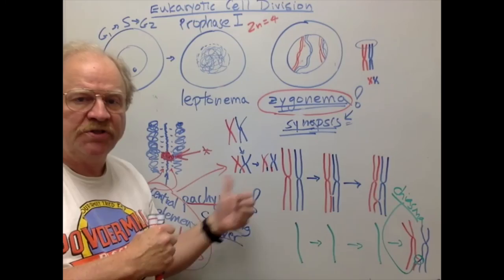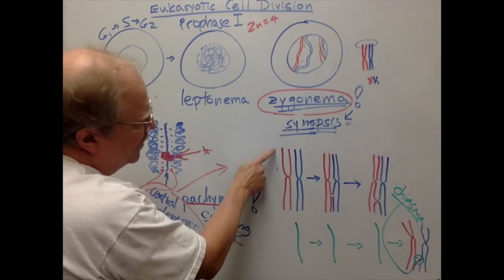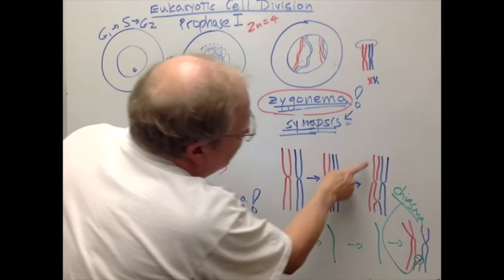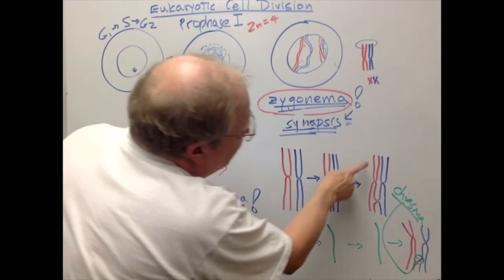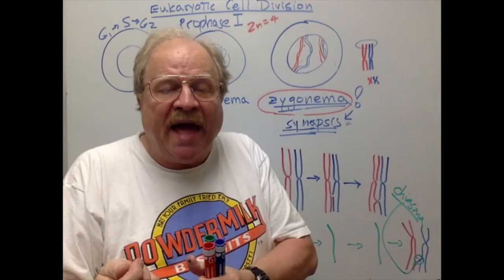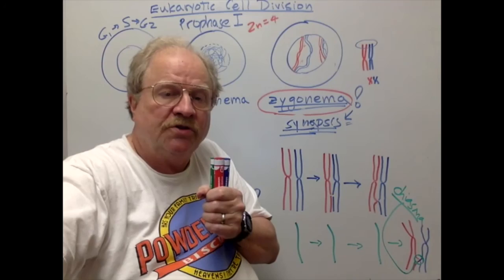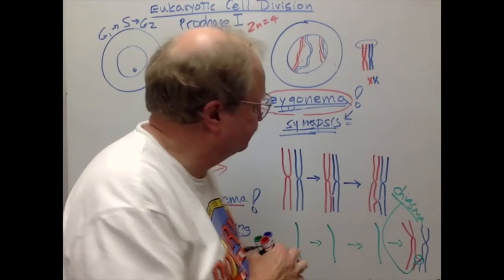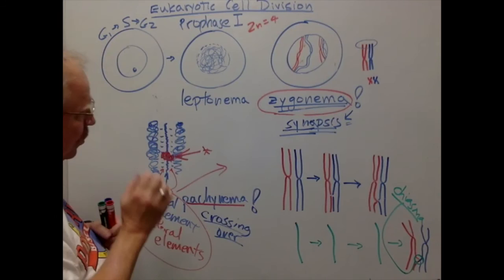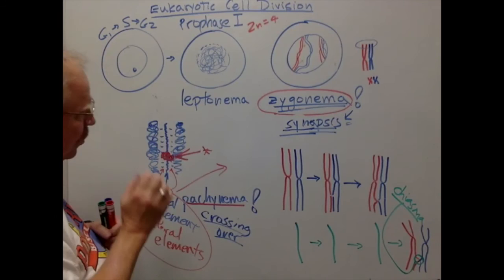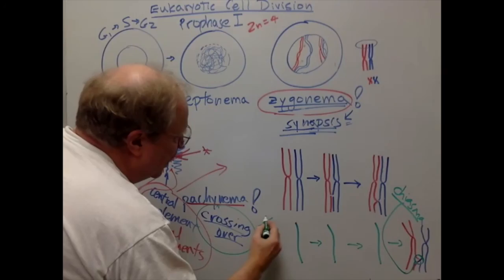The end result of crossing over is that genetic material has been exchanged. A chromatid that originally had genes all from your mother now has some genes from your father. If that chromosome gets passed on, it carries genes from both parents. This brings up the process of genetic recombination. That all-important process of crossing over occurs during pachynema — we'll come back later to look at it at the DNA level.